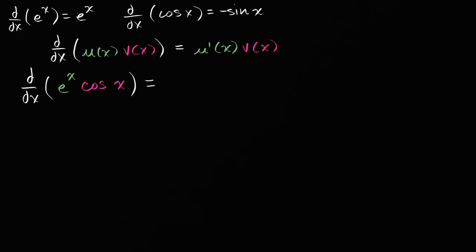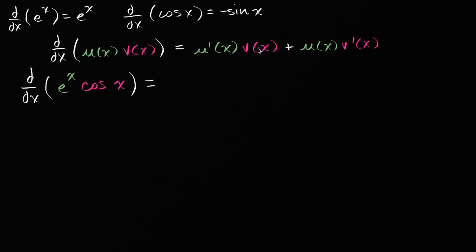Plus the first expression, u of x, times the derivative of the second expression, v prime of x. The way you remember it: you have two terms, and in each one you take the derivative of one factor but not the other. So the derivative of u times v is u prime times v, plus u times v prime.